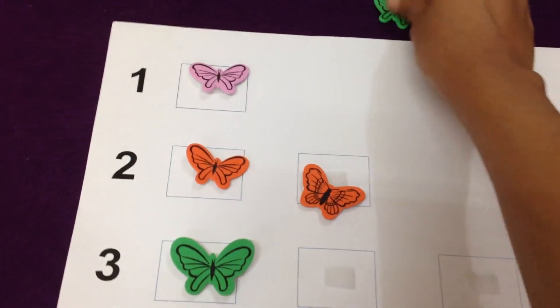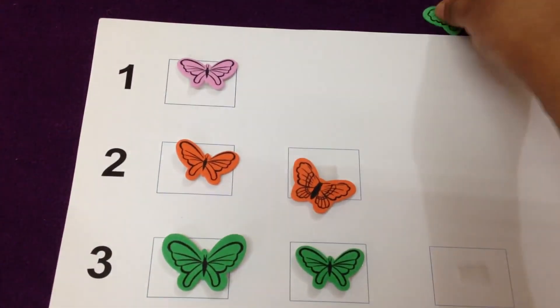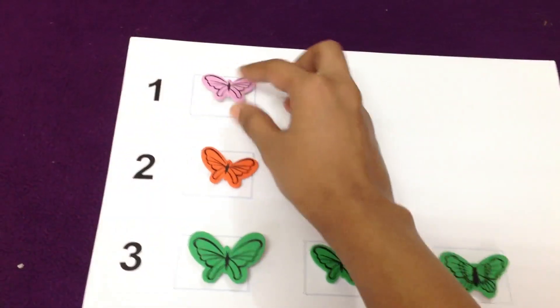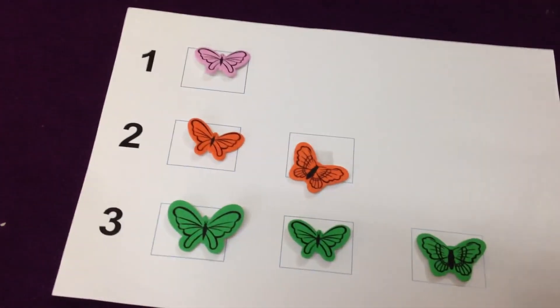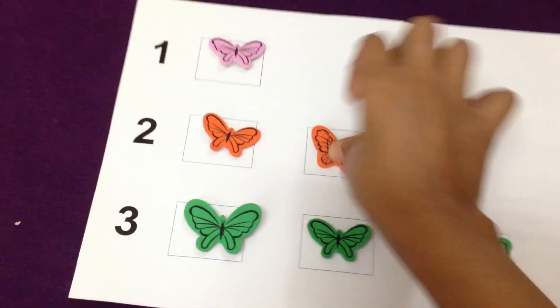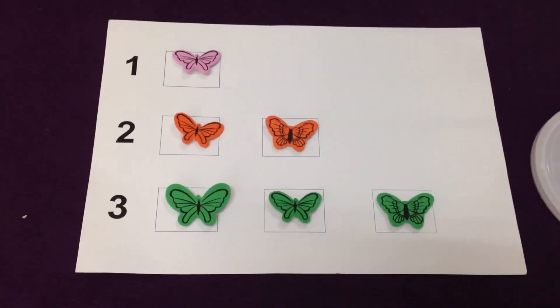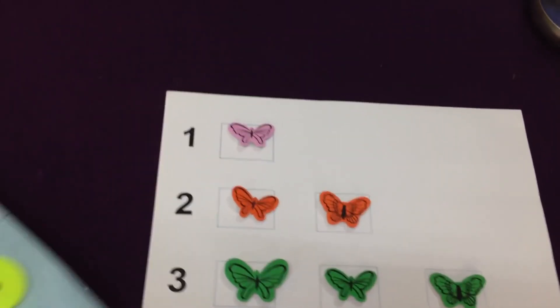You can give him big bells, tiny spoons, whatever objects you have at home for them to use in this counting table.